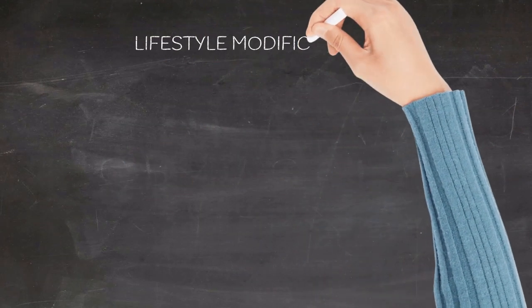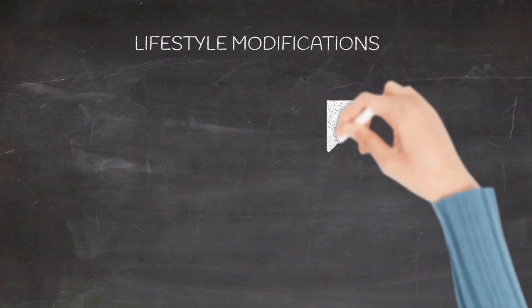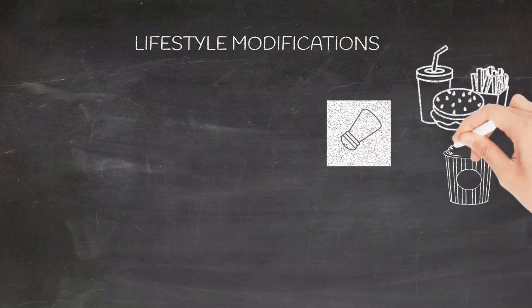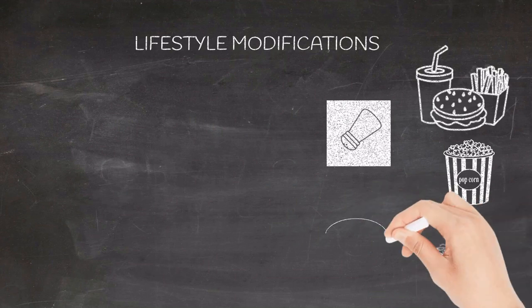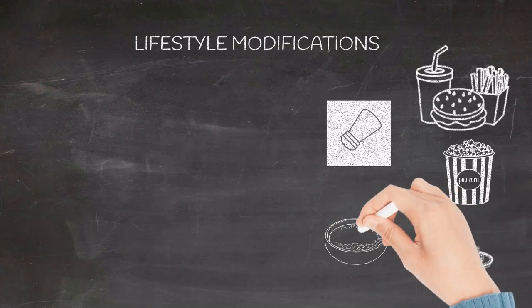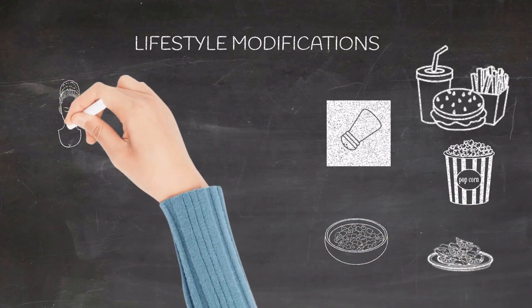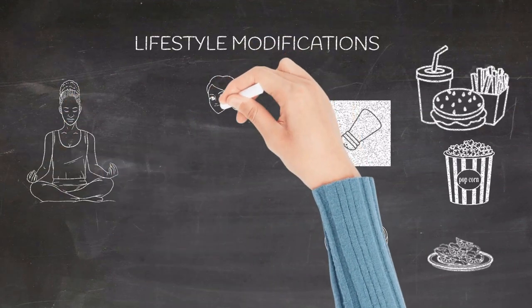Lifestyle modifications include salt restrictions, avoiding junk and oily food, including more vegetables and whole cereals in your diet, and including yoga and exercise into your daily activities.